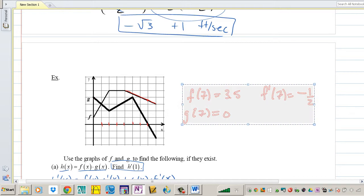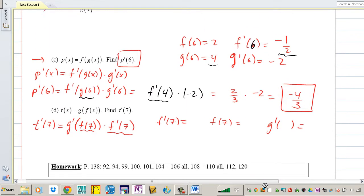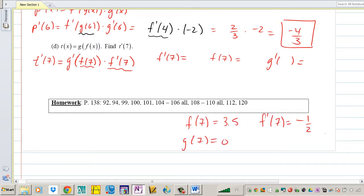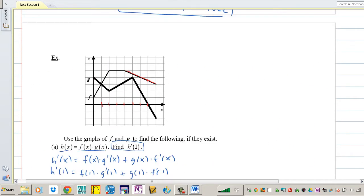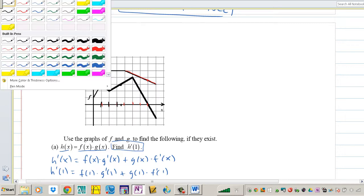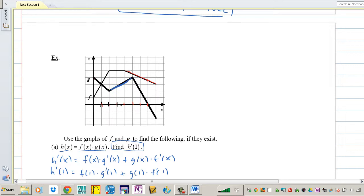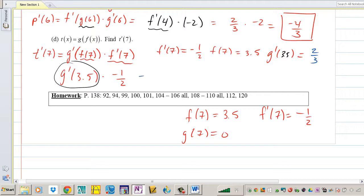Let me copy and paste this. F prime of 7 is negative 1 half. F of 7 is 3.5, which means that it's G prime of F of 7 which is 3.5, times F prime of 7 which is negative 1 half. Now I need to figure out what the heck is G prime of 3.5. 1, 2, 3 and a half. Well that looks like the same line segment that we had seen before. That line segment has a rise of 2 thirds, so it's 2 thirds. This is going to be 2 thirds times negative 1 half. The twos cancel, which is negative 1 third, and that is my derivative.